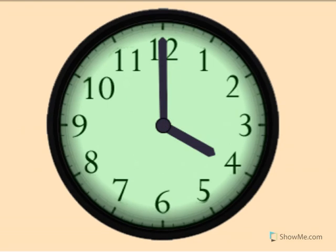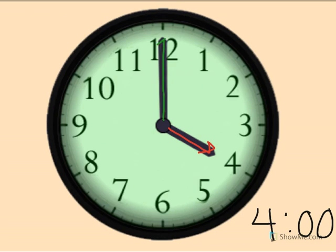4 o'clock. Show me 4 o'clock on your clock. The little hand tells the hour. The little hand points to the 4. The big hand tells the minute. Big hand points straight up is o'clock.